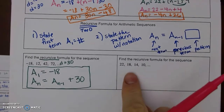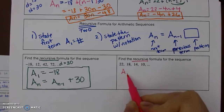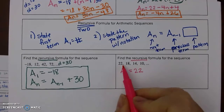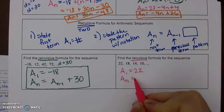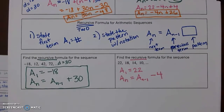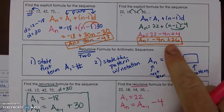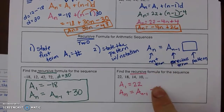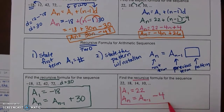For the second sequence: state the first term (a sub 1 = 22), then find the pattern — we're subtracting 4 — so a sub n = a sub (n - 1) - 4. Notice that the explicit formula and the recursive formula for the same sequence are not the same thing.